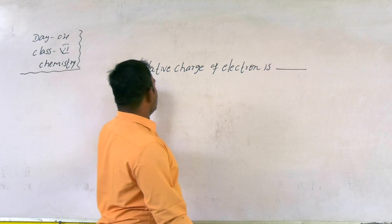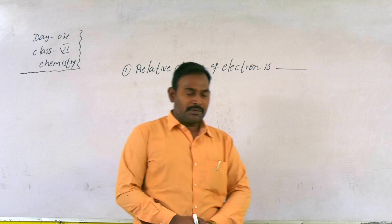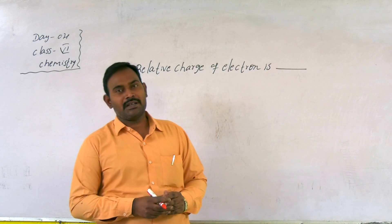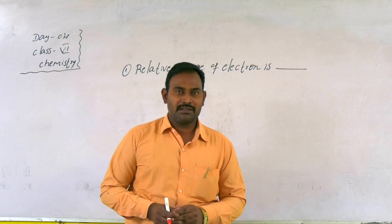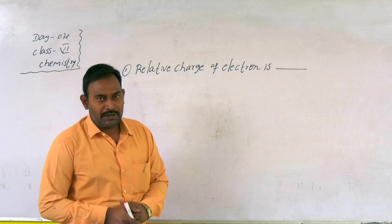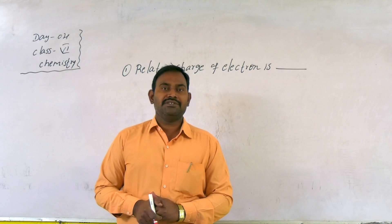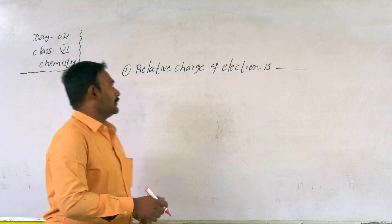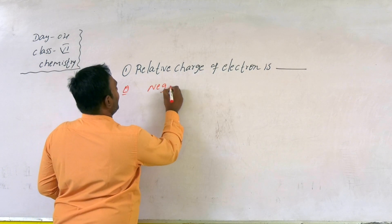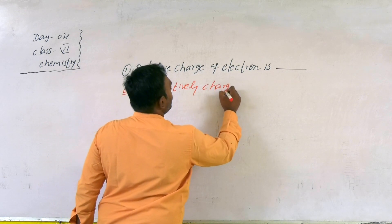Our first question is: the relative charge of the electron. Generally, each and every atom is made up of the proton, electron, and neutron. These are called fundamental particles or subatomic particles. Among these particles, electrons are the negatively charged particles, protons are positively charged particles, and neutrons are chargeless particles. So, the relative charge of the electron is: electrons are negatively charged particles.